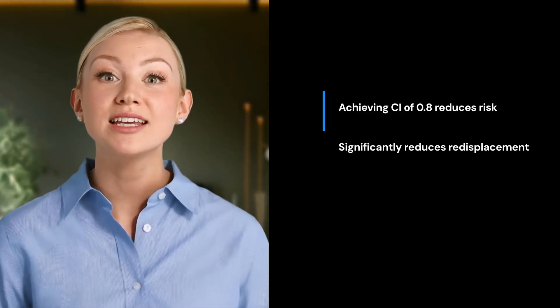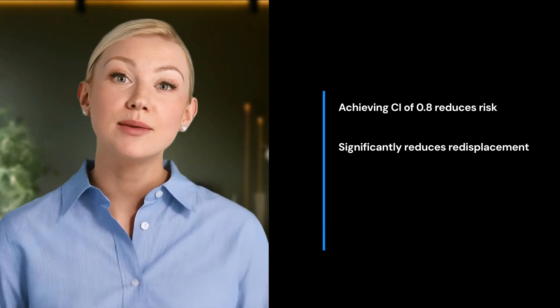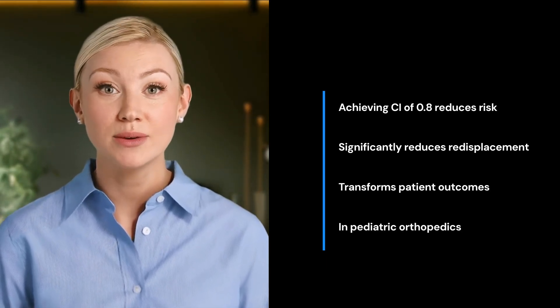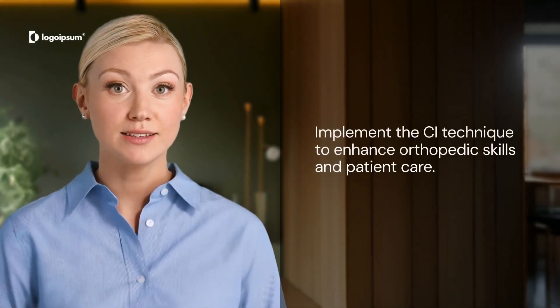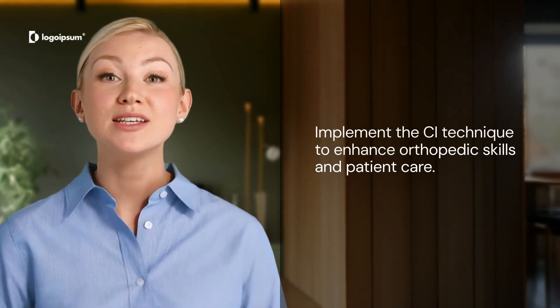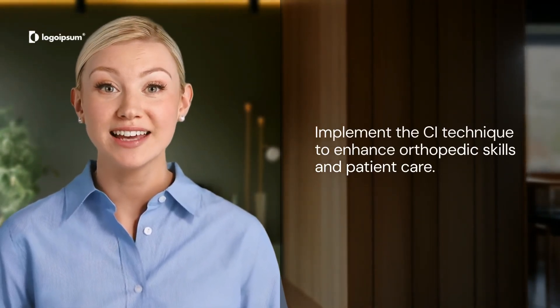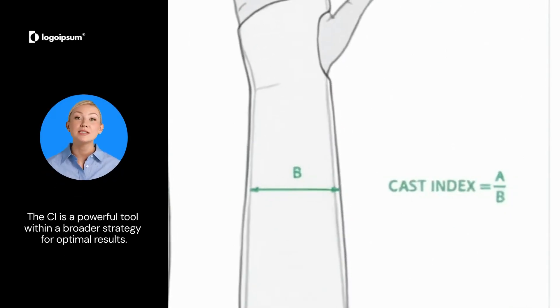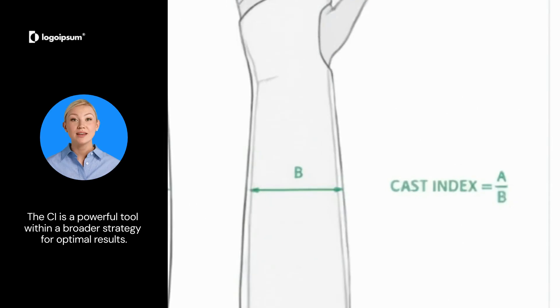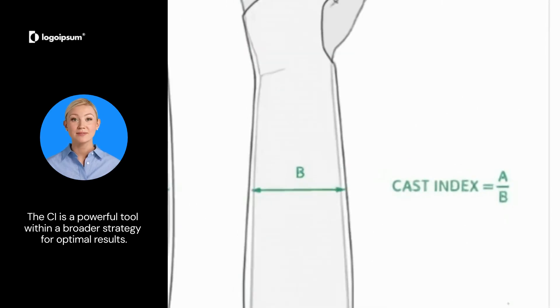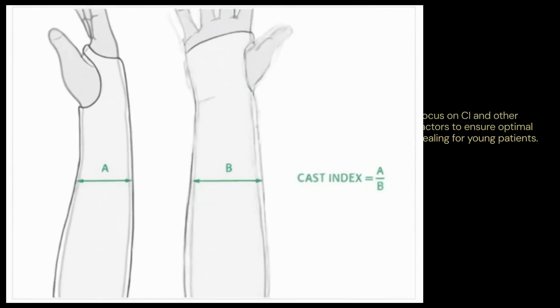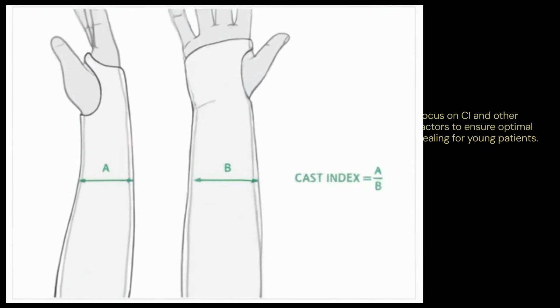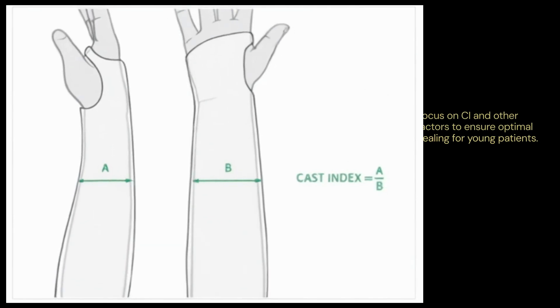By achieving a CI of 0.8, you significantly reduce the risk of re-displacement. This simple measure can transform patient outcomes in pediatric orthopedics. Implement the CI technique in your practice, stay informed, and continue learning. Remember, the CI is a powerful tool, but it's part of a broader strategy — combine it with other best practices for the best results. By focusing on the CI and other factors, you ensure optimal healing for young patients, reducing the need for further interventions.